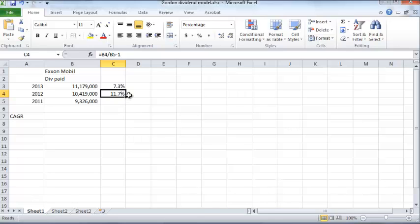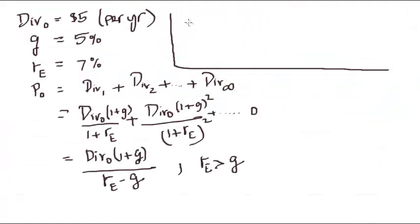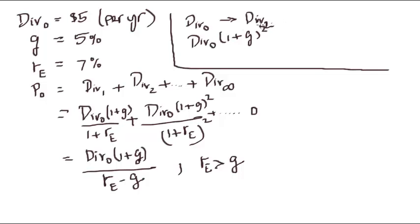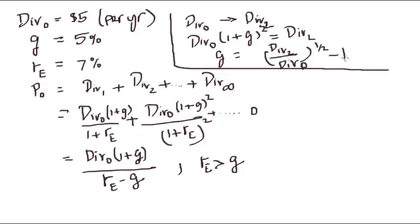So maybe the average is somewhere between 7% and 11%, perhaps 9%. Another way to compute this is to use the Compound Average Growth Rate, or CAGR. If the initial dividend was div0 and the final dividend grew to div2 over 2 years, then div0 times (1 + G) squared equals div2.